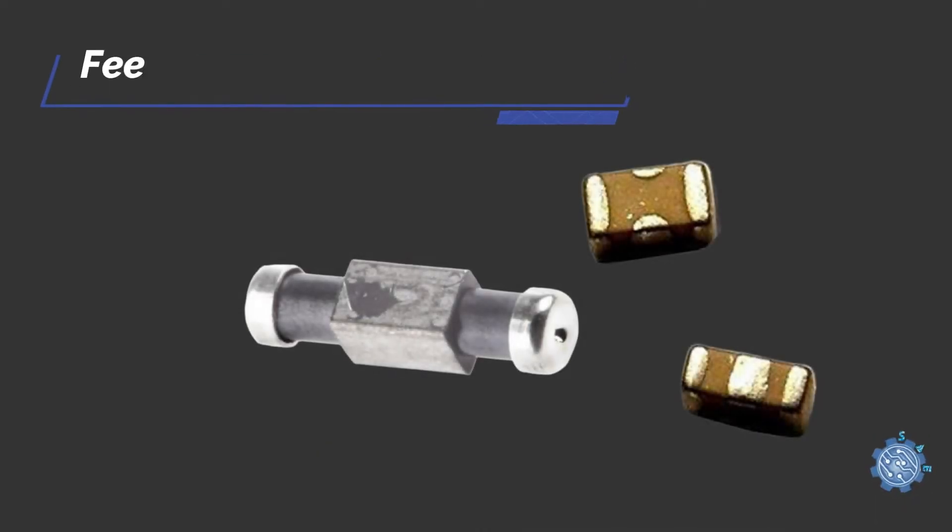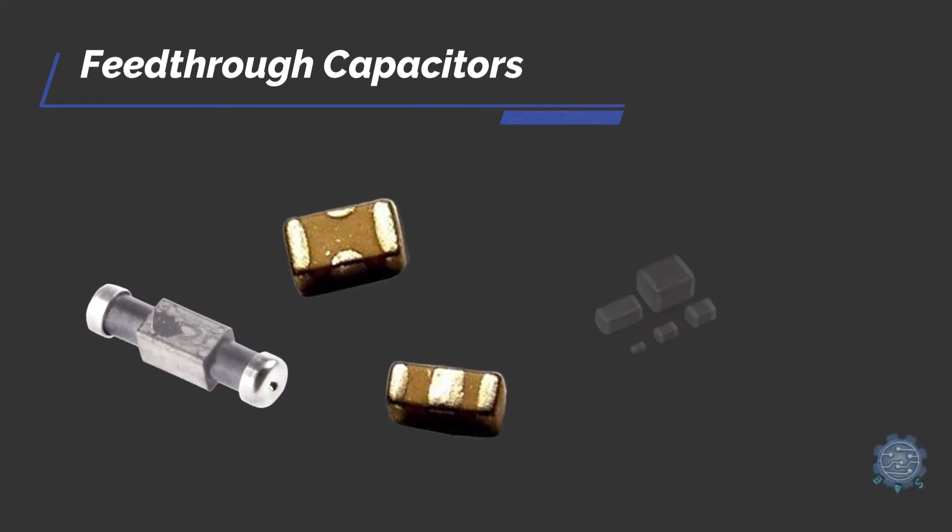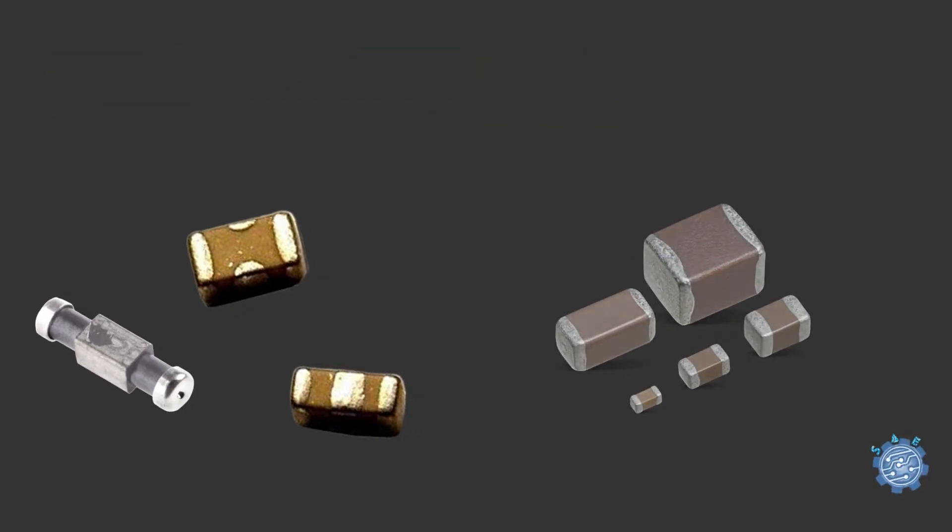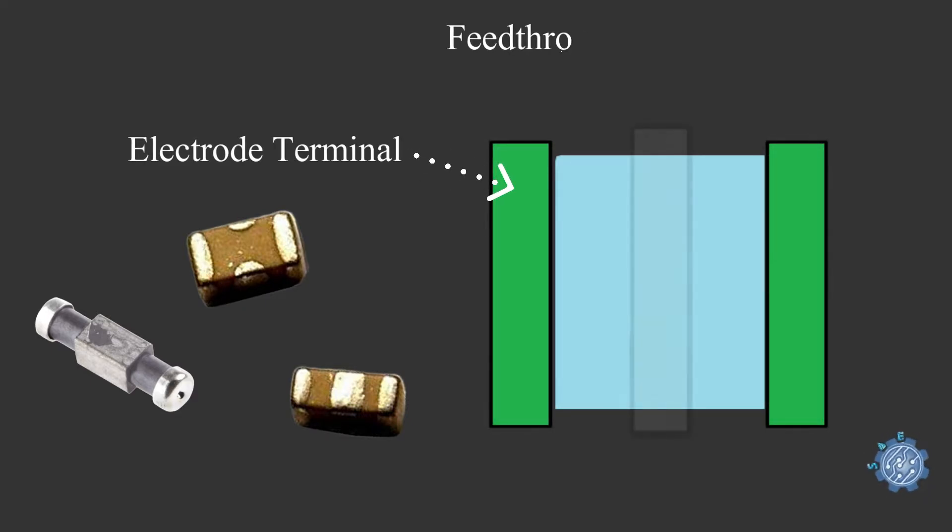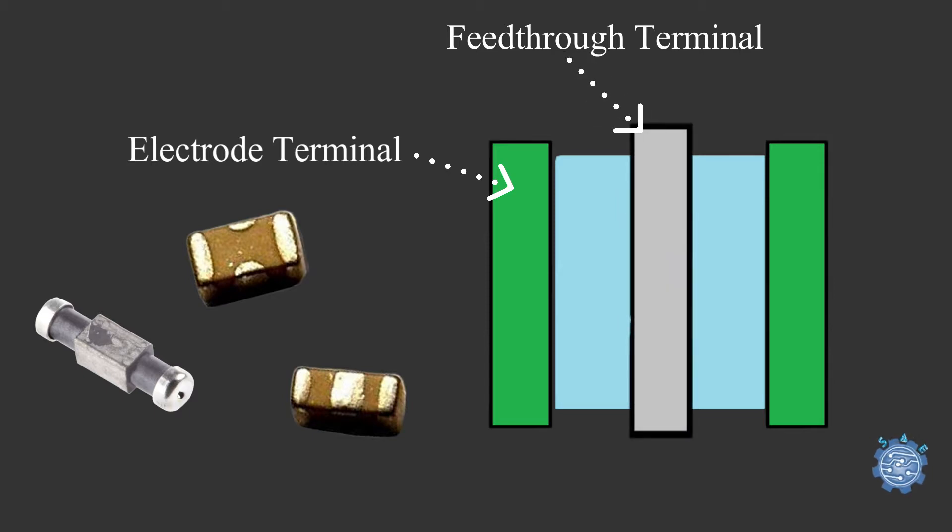Feed-through capacitors are similar to MLCC, but the difference is that they have the dielectric material arranged between outer electrode terminal and feed-through terminal, and the capacitance being formed between these two terminals.